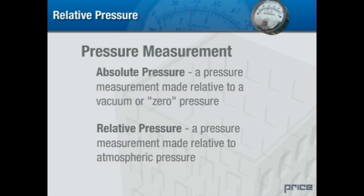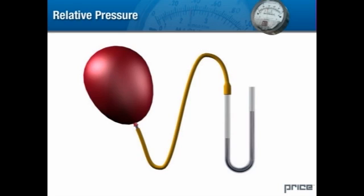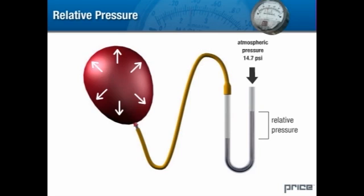Relative pressure is a pressure measurement relative to the surrounding atmosphere. If we use a manometer to measure pressure, the value we measure is the net result of the pressure source countered by the surrounding atmospheric pressure. The difference in fluid levels is therefore the relative pressure. Note that if you know what the atmospheric pressure is at your test site, you can easily convert from relative to absolute pressure by adding this value to your readings. Due to the nature of the way HVAC systems are tested and installed, relative pressure measurements are most relevant and suitable for our needs.